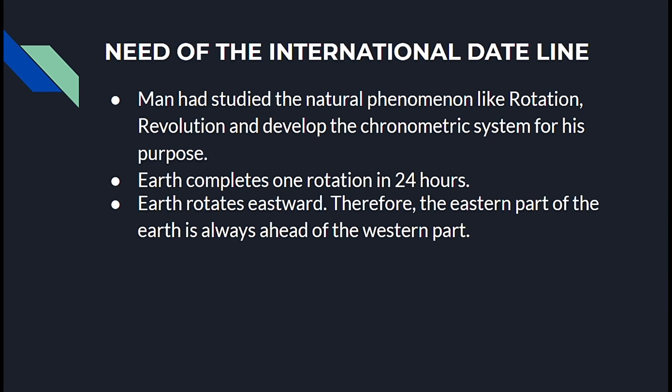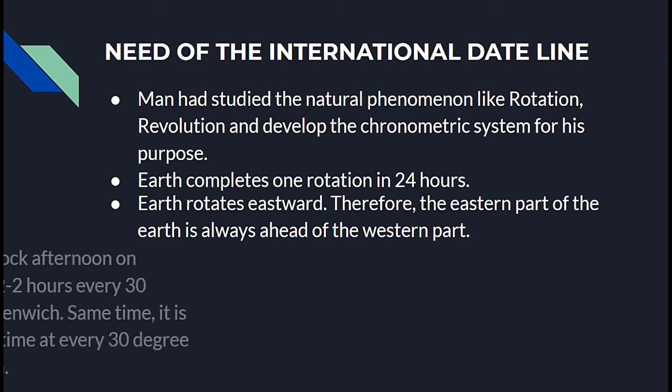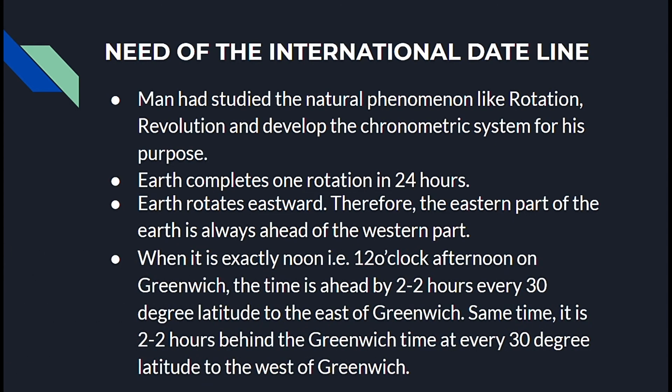When it is exactly noon, that is 12 o'clock afternoon on Greenwich, the time is ahead by one hour for every 15 degrees — or equivalently, every 30 degrees east of Greenwich is ahead by 2 hours. Similarly, time is behind the Greenwich time at every 30 degrees latitude to the west of Greenwich.